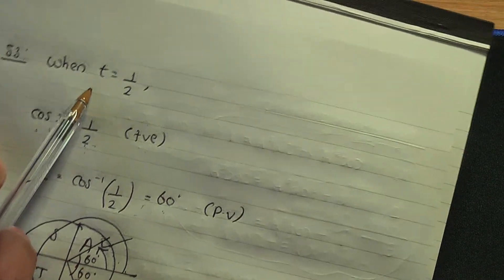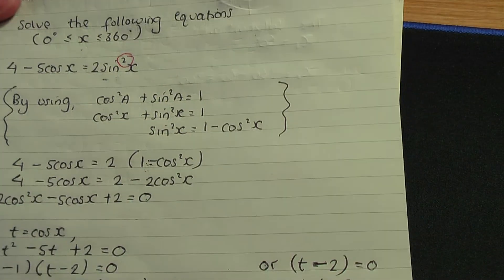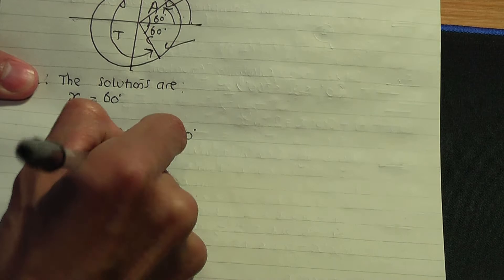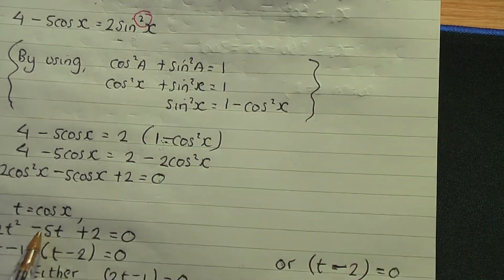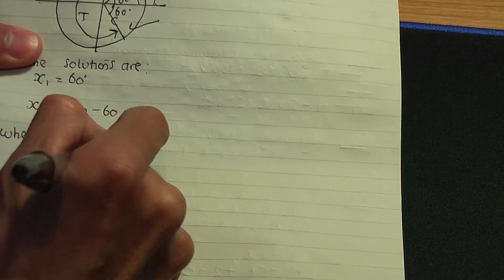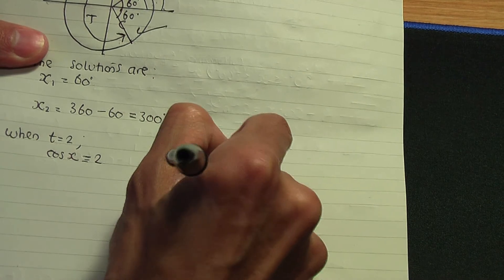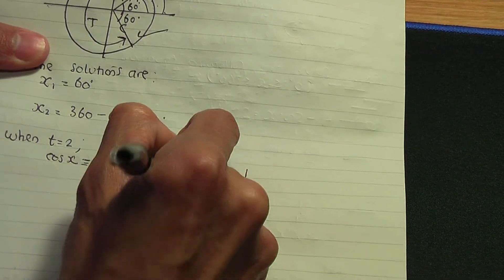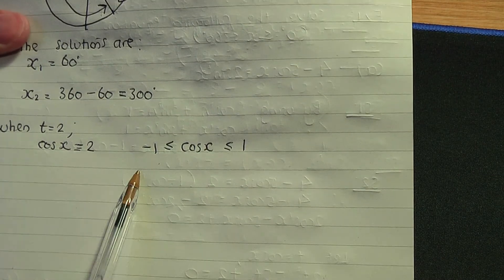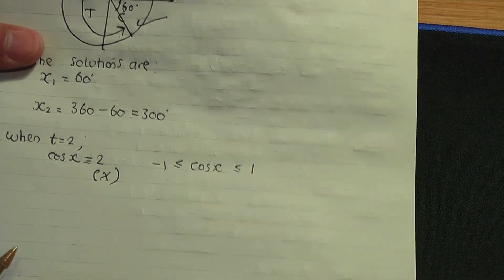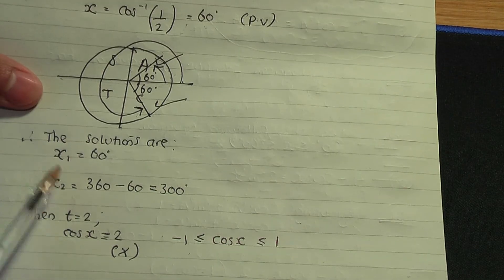For the second value, t equals 2: substituting into t equals cos x gives cos x equals 2. However, this equation cannot be solved, because cos x only lies between minus 1 and 1 — the range of cos is between 1 and minus 1 — so cos x equals 2 has no solution. Hence we have only two solutions in total.